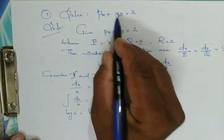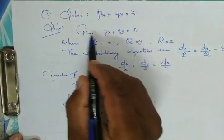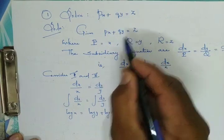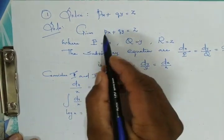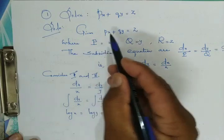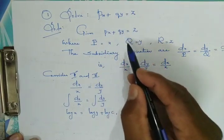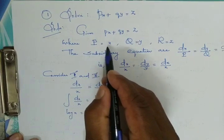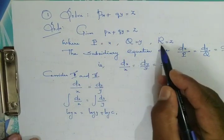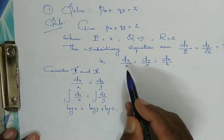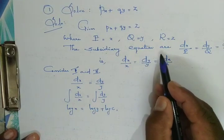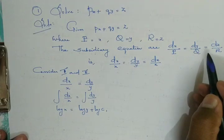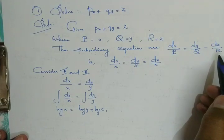Solve px + qy = z. In the given problem, small p times x plus small q times y equals z. The coefficient of small p gives capital P = x, the coefficient of small q gives capital Q = y, and capital R = z. We always form the auxiliary equation first: dx by capital P equal to dy by capital Q equal to dz by capital R, which here becomes dx/x = dy/y = dz/z.